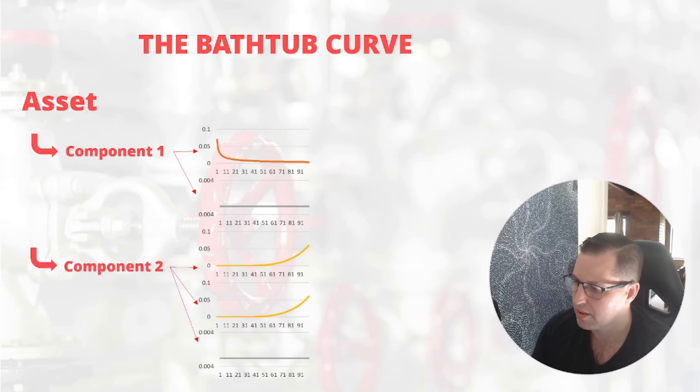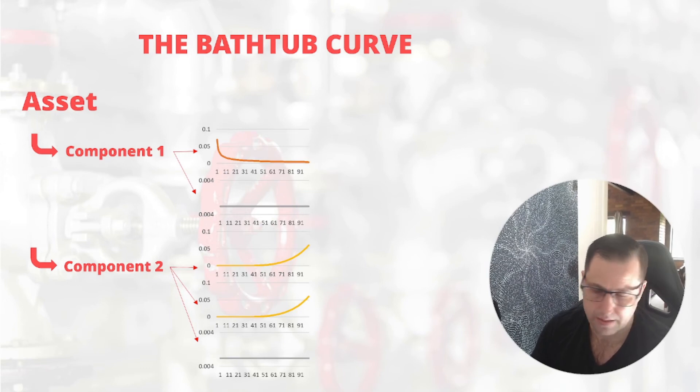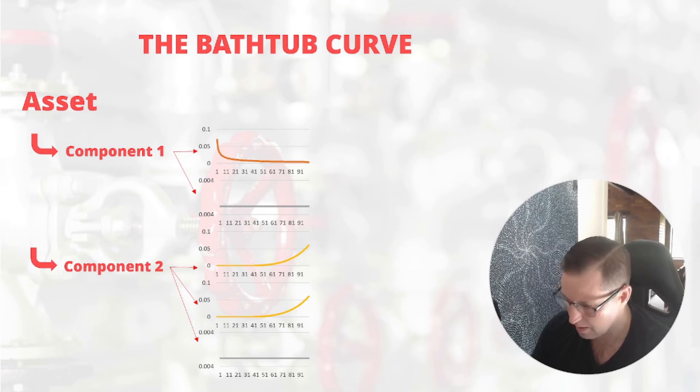The second component has, let's say, three modes of failure. Two of them are wearout and described in yellow, and some sort of uncontrollable impact or external cause of failure. We're going to describe that again using a random distribution.